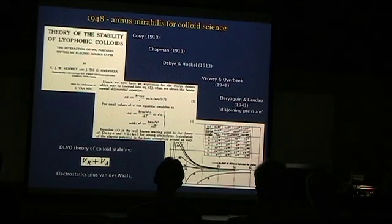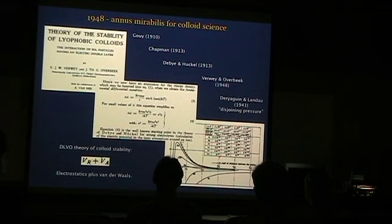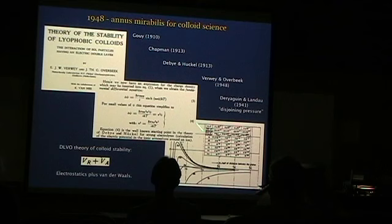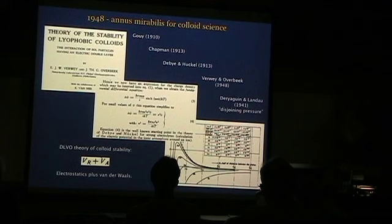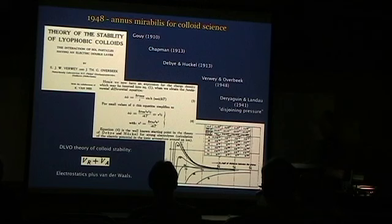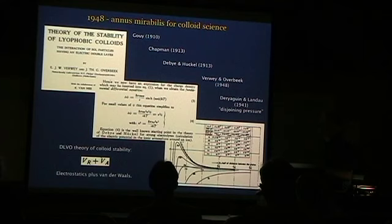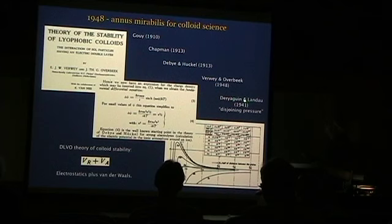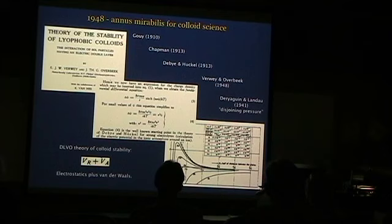Electrostatic interactions in the world of colloids go way back, but the first quantitative formulation comes from the beginning of the 20th century: Gouy, Chapman, later Debye and Hückel, and finally Verwey and Overbeek, who also wrote a book on the subject. In 1948, when this book was published — one of the science classics and still worth reading — they set up a framework to talk about electrostatic interaction in colloidal science and soft matter physics in general. The theory was also proposed by Derjaguin and Landau, a little bit before that time, but less known because it was published in a Russian journal.